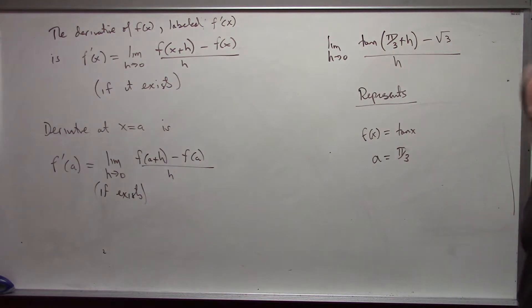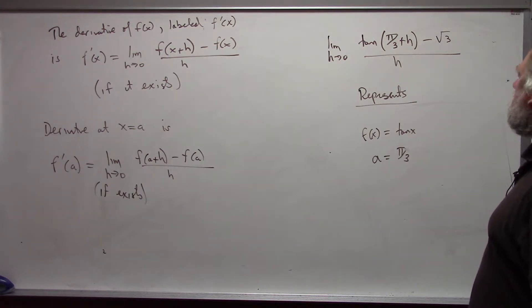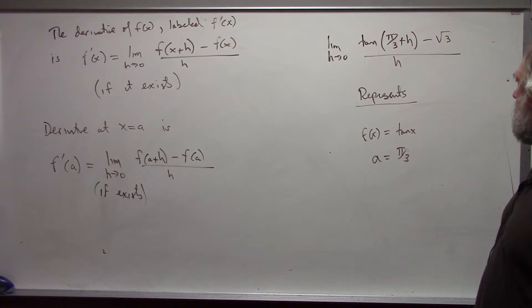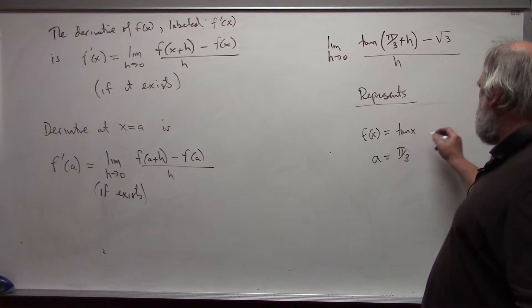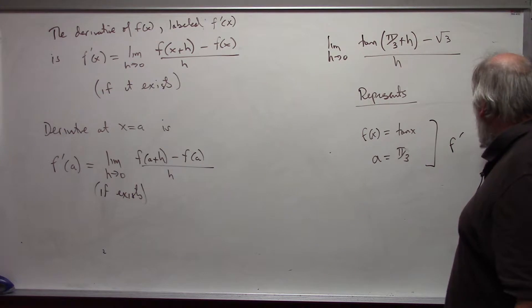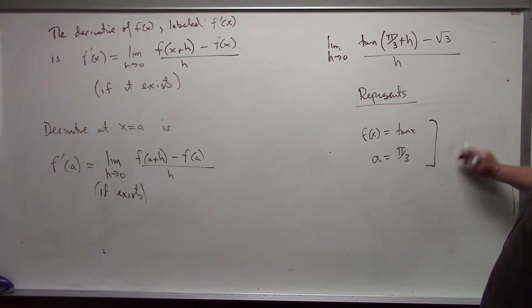Now, the value of this limit we can't do at this point, but that's not important. The point is that this represents the derivative of this particular function at that particular value. So this represents f prime at pi over 3.